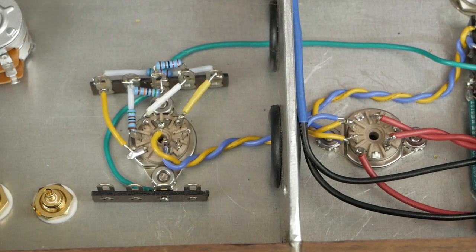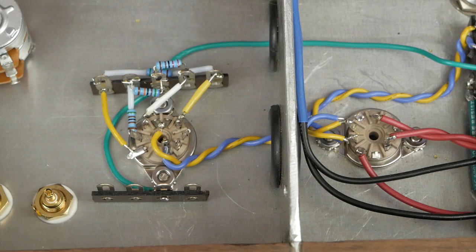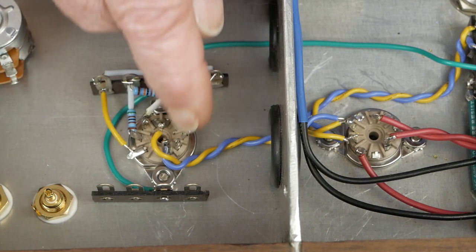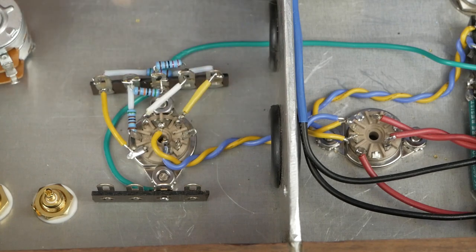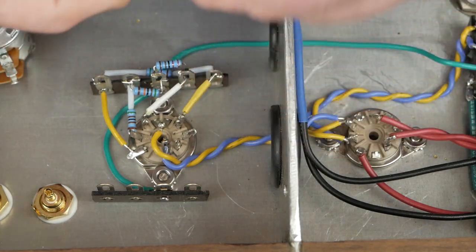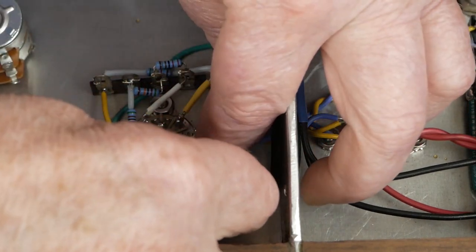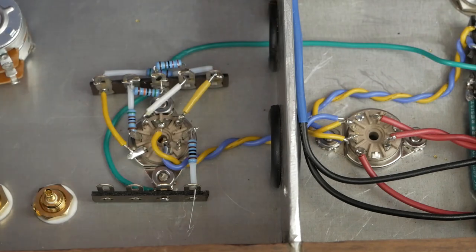Now the next thing we need to do is connect our grid stopper for the cathode follower. So I'm going to bend that over a little bit. Come in here and put this little guy in place.